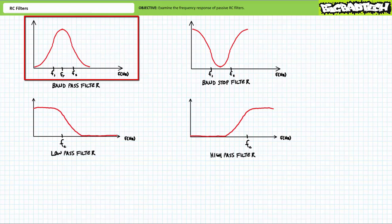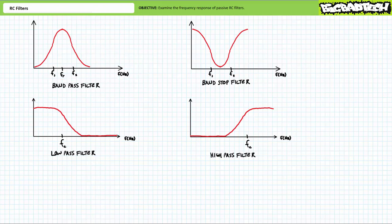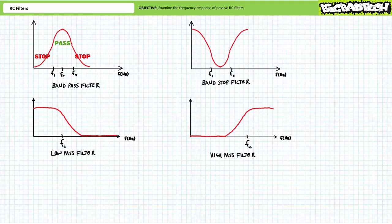You'll recall in the resonance lecture, we learned that source current through a series circuit peaks at the resonant frequency FR, and inside a specific bandwidth defined by the lower and upper half power frequencies F1 and F2, the circuit experiences half power or greater. A series resonant circuit is a type of filter, specifically a band pass filter, whereby frequencies inside a particular band experience more output, and frequencies outside this particular band experience less output. Frequencies inside a specific band are passed, hence the name band pass filter.